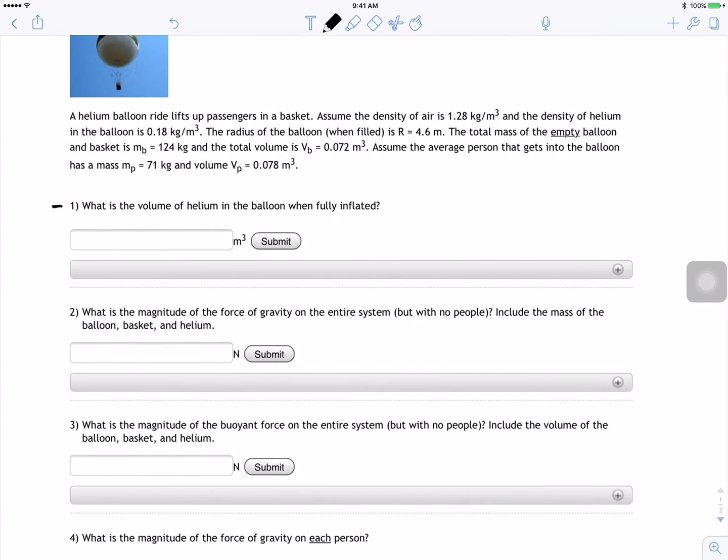So what is the volume of the helium in the balloon when it's fully inflated? Volume of helium can be equal to the volume of the balloon inflated, which is the volume of a sphere: 4/3 π r³. And in this question r was 4.6, so 4/3 π times 4.6 cubed. And for this one I got V_h is equal to 407.72 meters cubed.